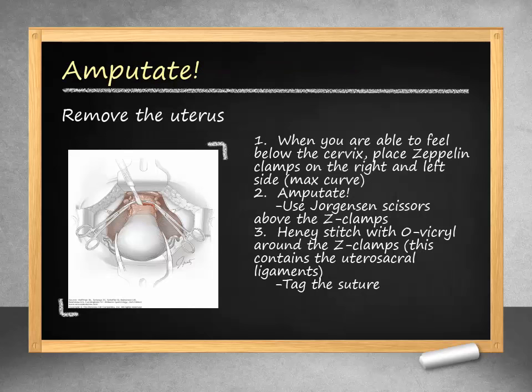Once you are at the level of the lower cervix, you are ready to place zeppelin clamps and amputate the uterus. A maximally curved zeppelin clamp is placed below the cervix on the right or left side, followed by a second maximally curved or less curved clamp on the opposite side. Jorgenson scissors are then used to amputate the uterus from the vagina. The specimen is handed off. Vicryl suture in a Heaney fashion is used to secure these pedicles, which include the uterosacral ligaments. You should tag these sutures with a hemostat.